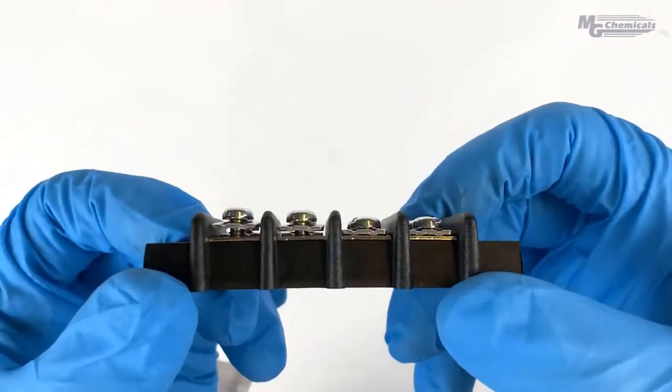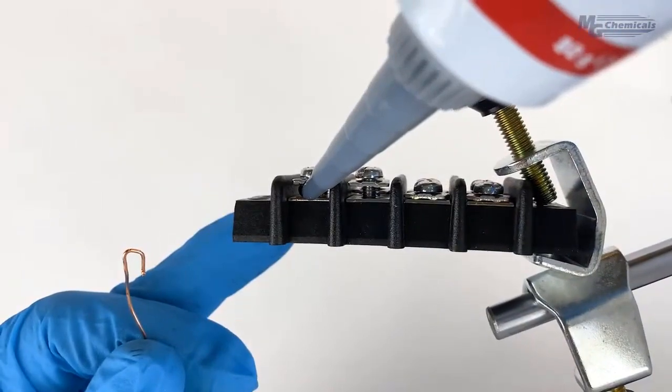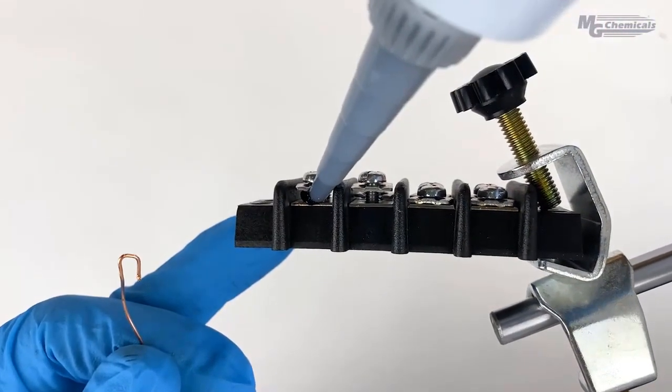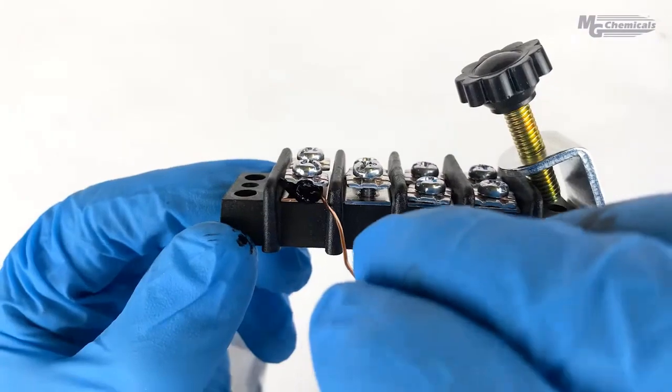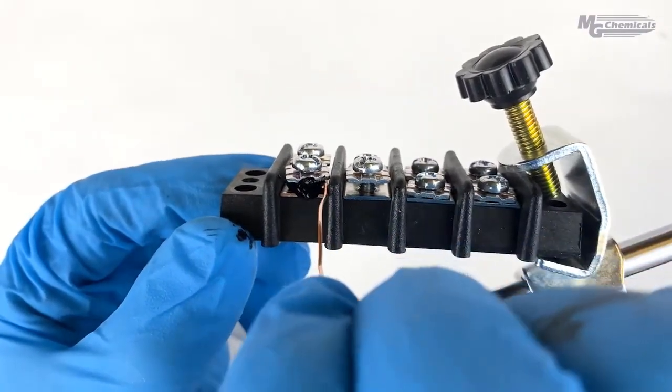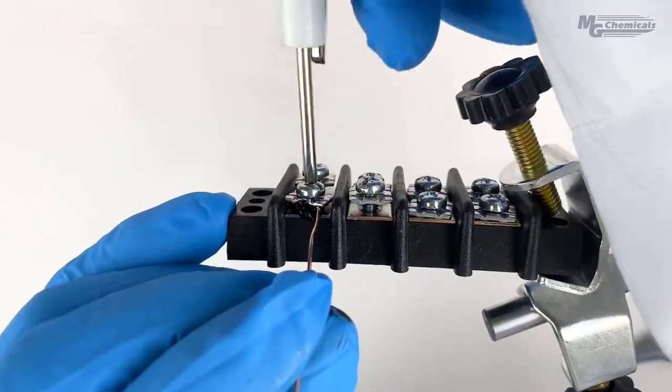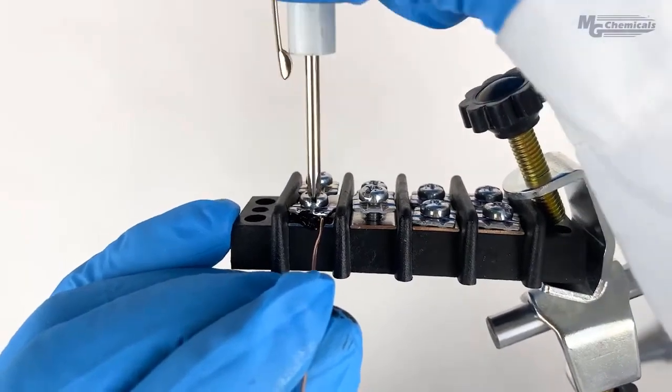Electrical grease is most commonly used as a gap filler to join irregular surfaces together. In this example, the grease is placed between the catch screw and contact. When tightened, the grease ensures there's no gap, ensuring a complete path for the current to flow.